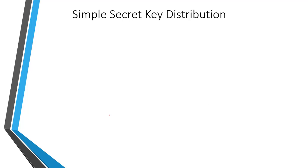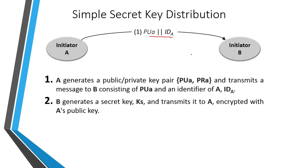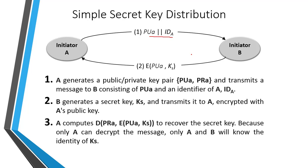The first method is simple secret key distribution. Initiator A generates a public and private key pair — public key PUA and private key PRA — and transmits a message consisting of its public key PUA and identity identifier IDA. In the next step, B generates a secret key KS and transmits it to A encrypted with A's public key. A then uses its private key PRA to decrypt the message and recover the secret key KS, so only A and B will know KS.